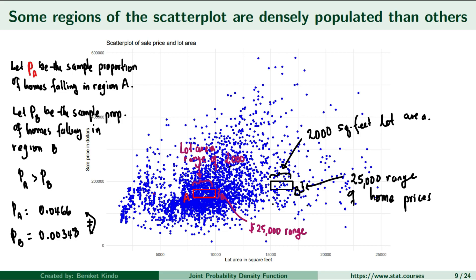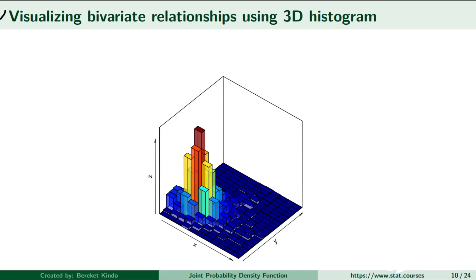A way to visualize the joint distribution of home sale prices and lot areas is by creating a three-dimensional plot. For each rectangular partition spanning a range of $25,000 in sale prices and 2,000 square feet of lot area, you add a third dimension representing the sample proportion — creating rectangular prisms that form a three-dimensional histogram. The volume of one prism is the area of the two-dimensional region on the x-y plane multiplied by the height of the prism, where the height equals the sample proportion of homes in that region.